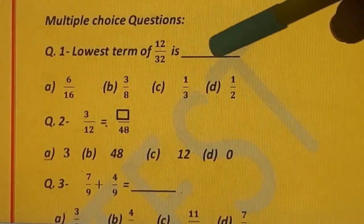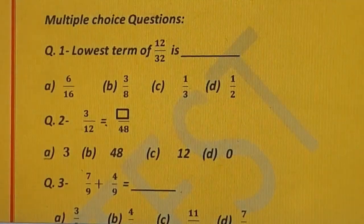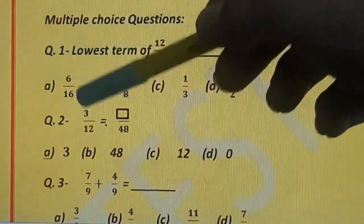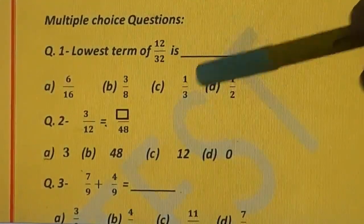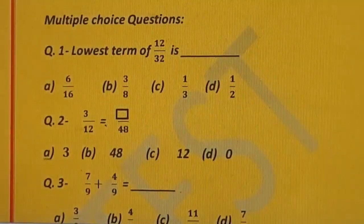Here is your question number 1. Lowest term of 12 upon 32 is dash. You have to convert it into lowest term and tell the answer. Options are: A) 6 upon 16, B) 3 upon 8, C) 1 upon 3, and D) 1 upon 2.